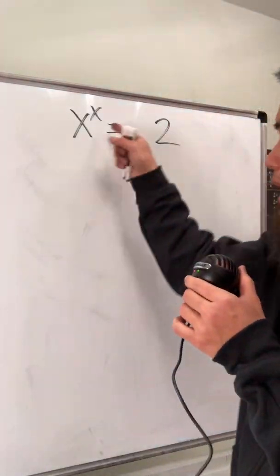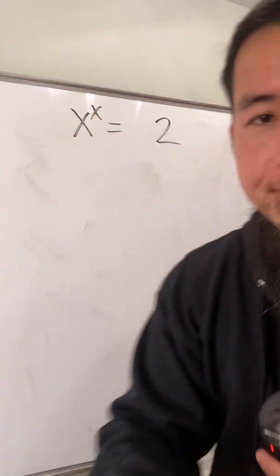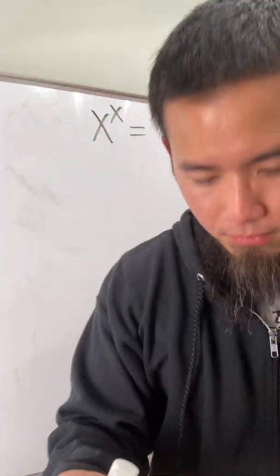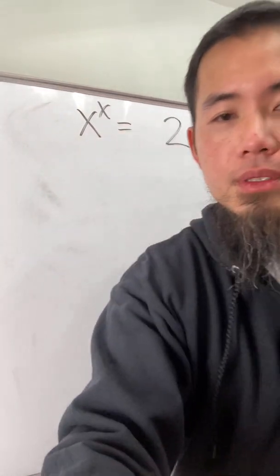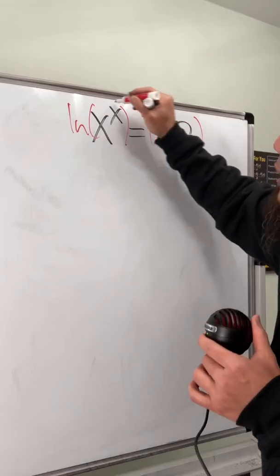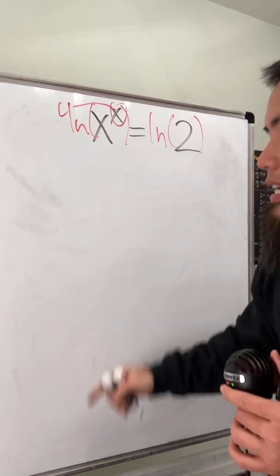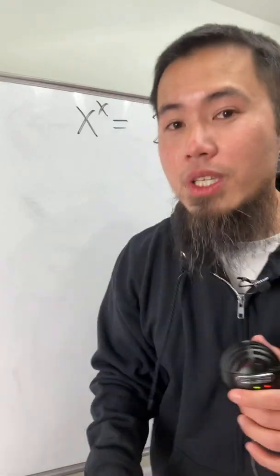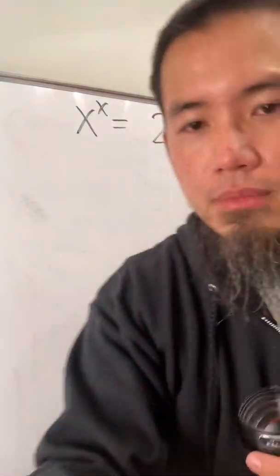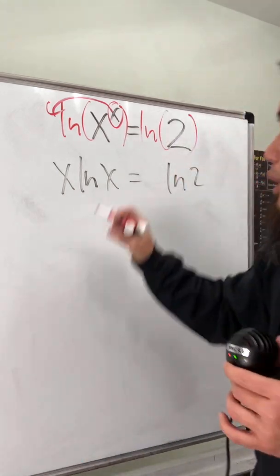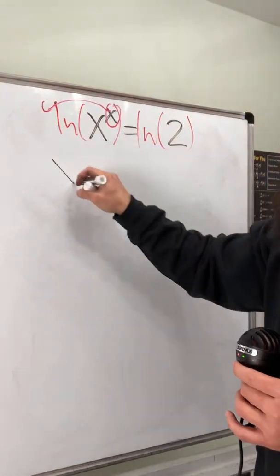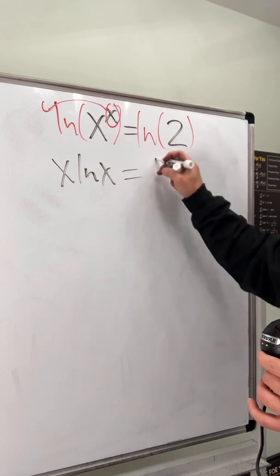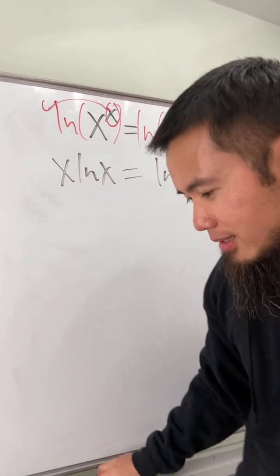How do we solve the equation x to the x power is equal to 2? We take the natural log on both sides to bring the x to the front. However, we have to use the Lambert W function. Now we have x times ln x equal to ln 2.